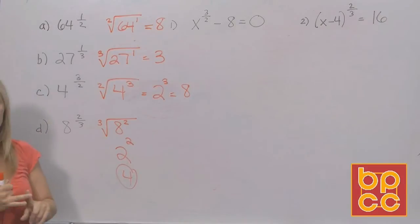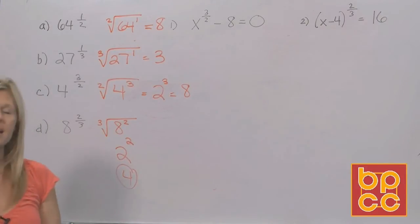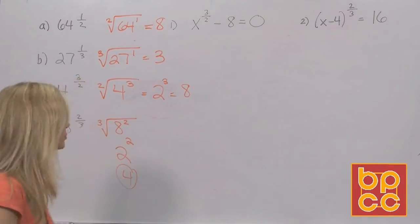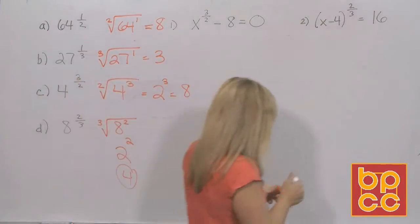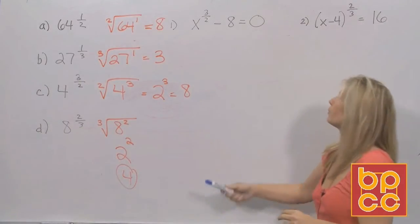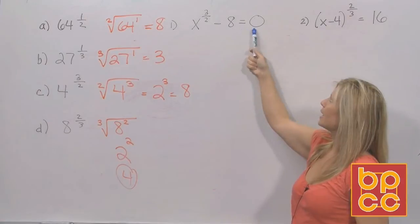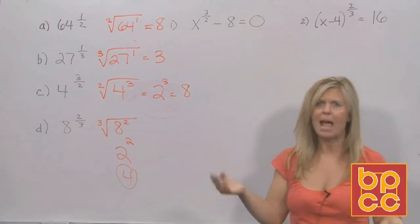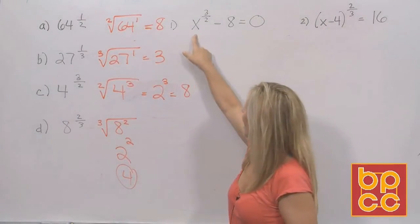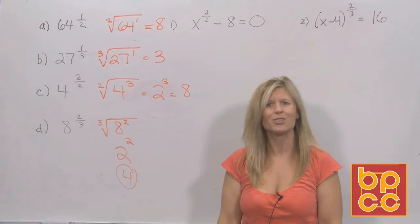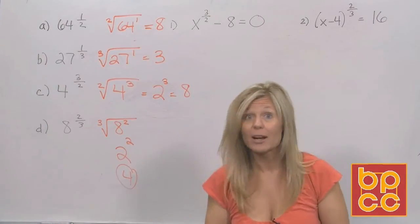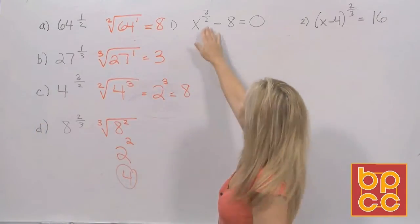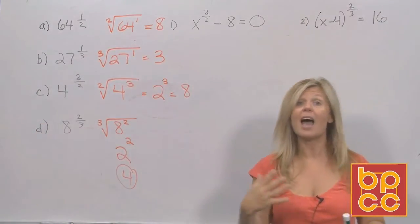Now we're going to solve equations where you see exponents that are fractions — just think in terms of roots. Our first equation is x to the three-halves minus 8 equals 0. You might think to factor it, but you can't factor a variable with a fractional exponent the way you can x squared or x to the fourth. So we need a different procedure.